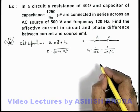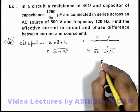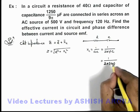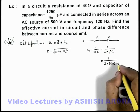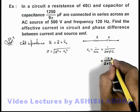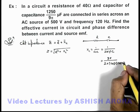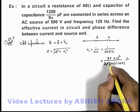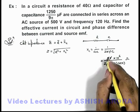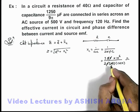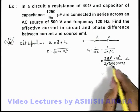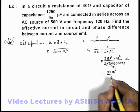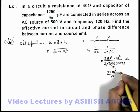Substituting the values, we get Xc = 1 over 2π, with frequency 120 hertz and capacitance 1250 by 9π micro farad, that is into 10⁻⁶, giving units of ohms. The π terms cancel out, and simplifying: the denominator becomes 80 × 1250, which equals 3 × 10⁶ by 10⁵, so Xc = 30 ohms.